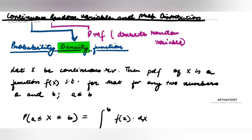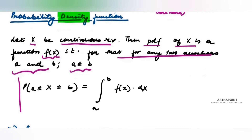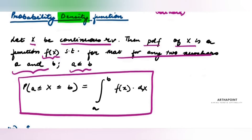Let X be a continuous random variable. Then the probability distribution function of X is a function such that for any two numbers a and b, where a is less than b, if I have to find the probability that X is between a and b, I have to integrate the function between a and b.